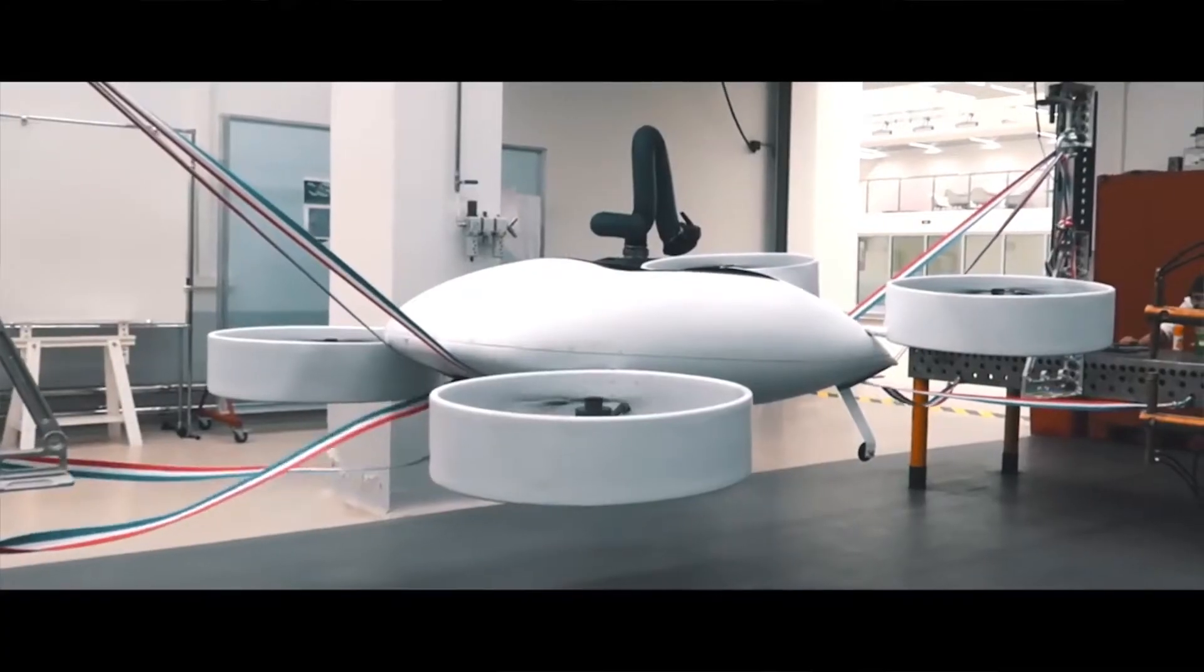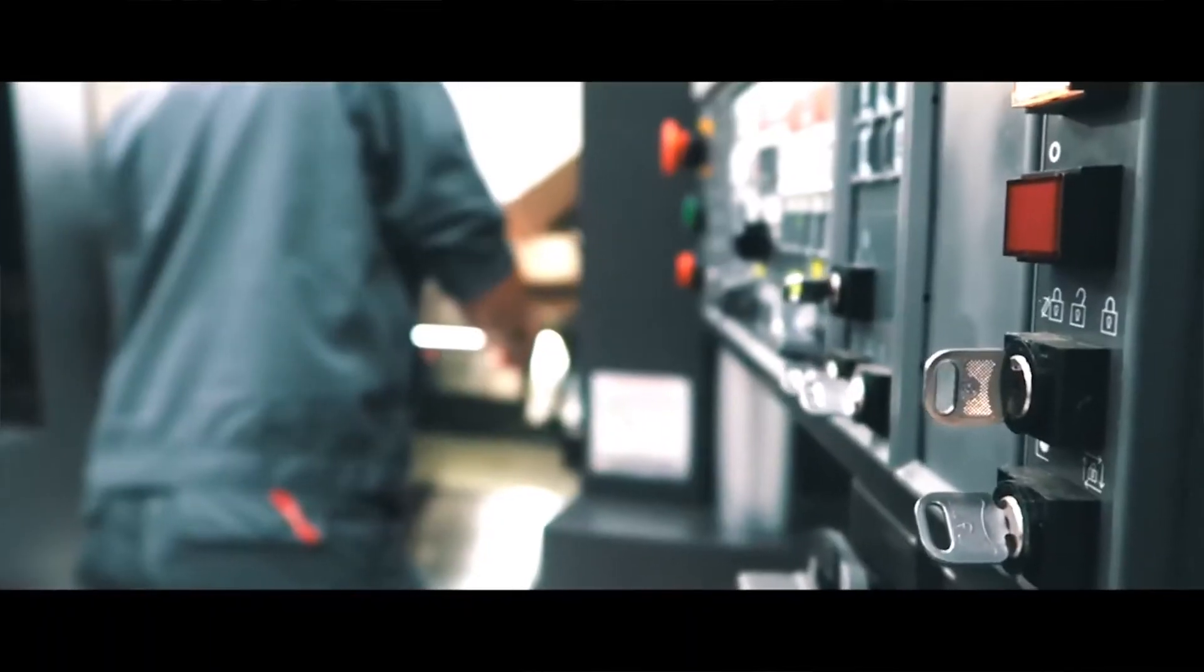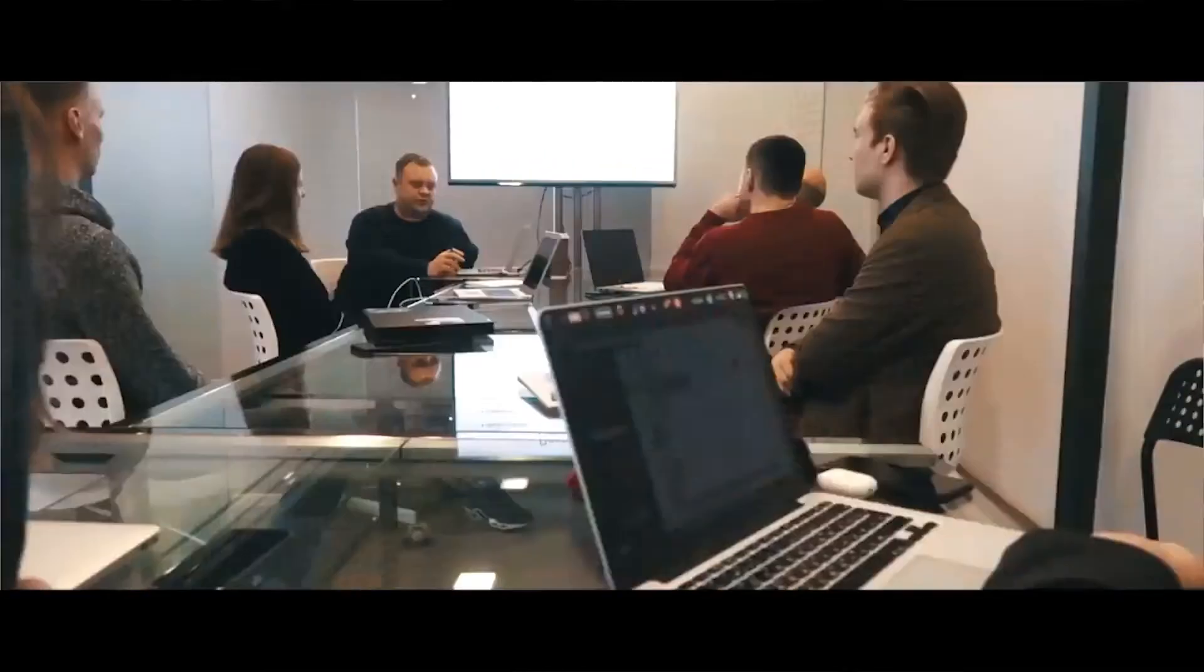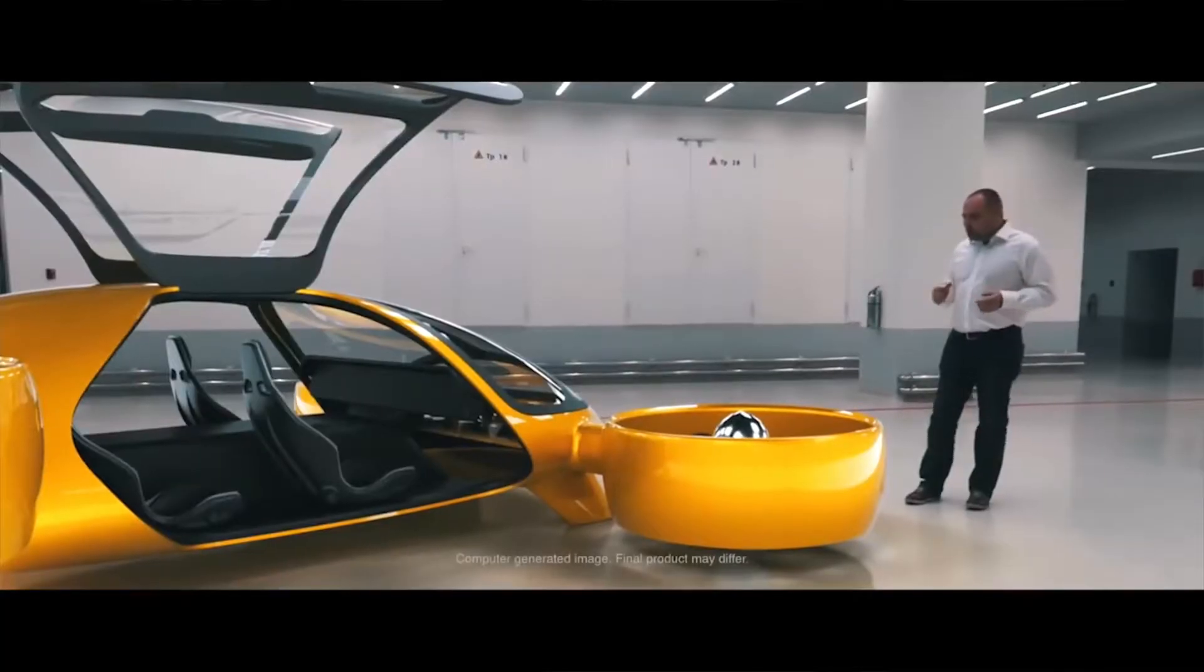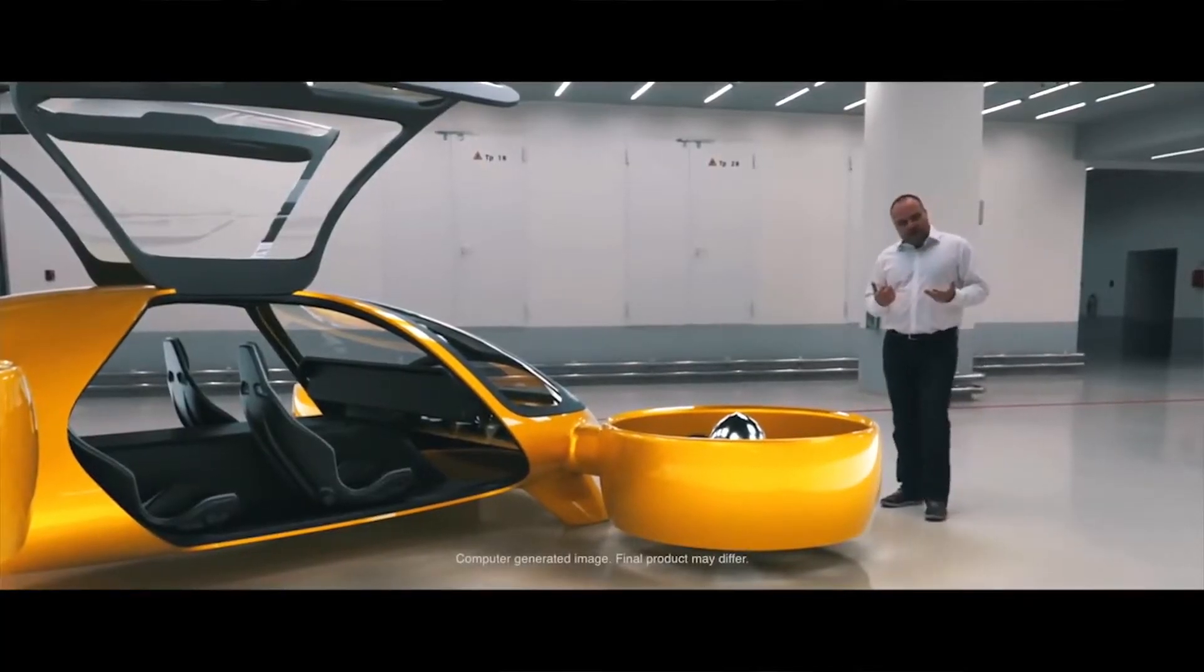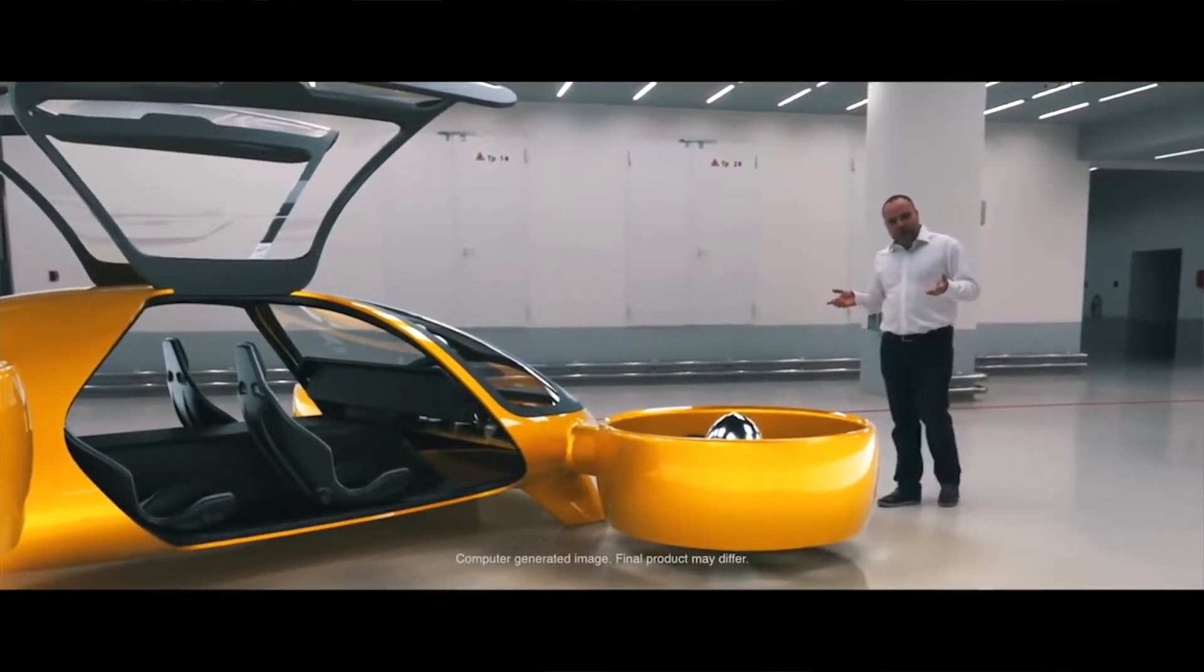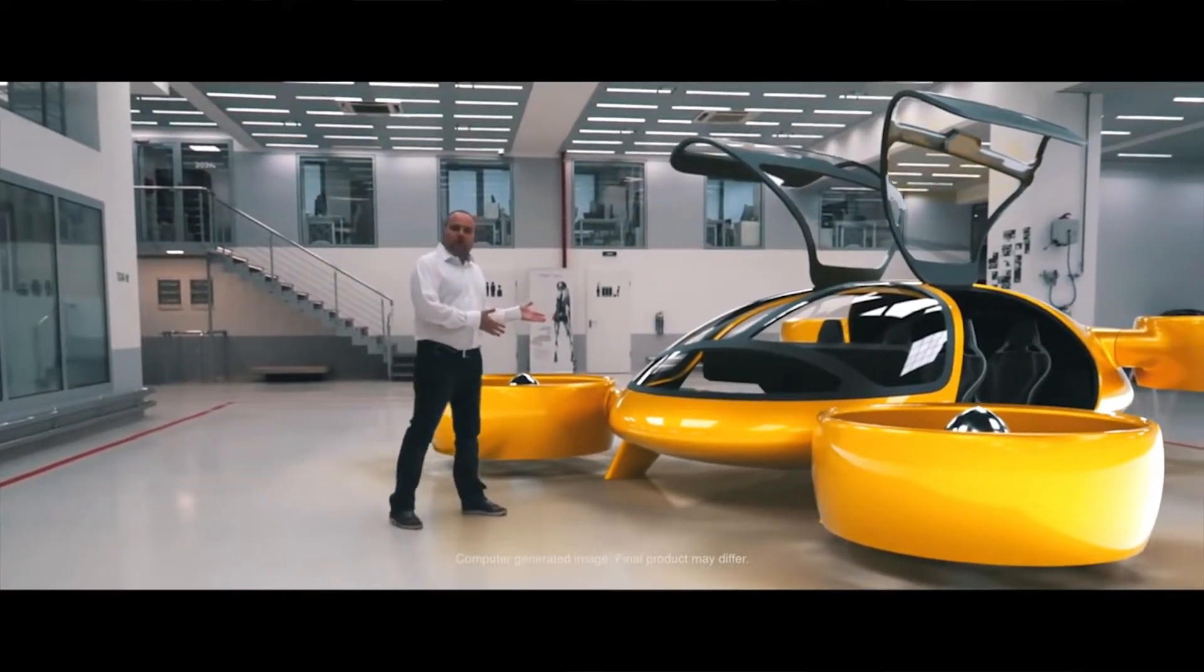The team wants to keep the aircraft small, about 5x5 meters, with low noise, equivalent to a truck passing by, and panoramic views. As you can see, the cockpit is almost all glass. The CTO actually admits that he was inspired by Back to the Future, so it's no wonder that they threw on the DeLorean's Falcon Wing doors as well.